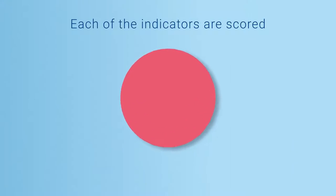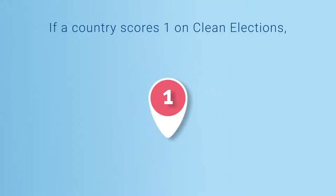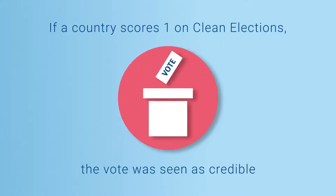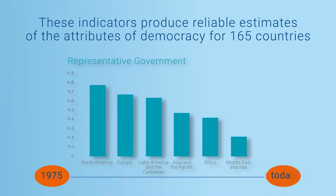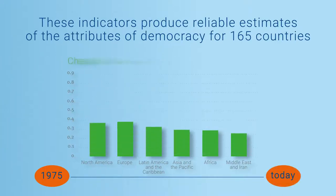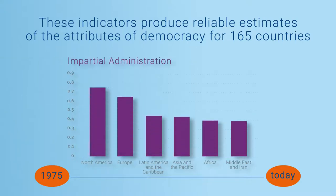Each of these indicators are scored, ranging from zero to one. If a country scores one on clean elections, for example, that means the vote was seen as credible. These indicators produce reliable estimates of the attributes of democracy for 165 countries, covering the years 1975 until today, and updated on a yearly basis.